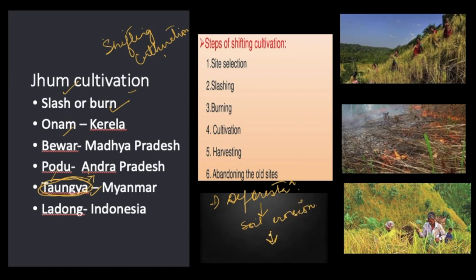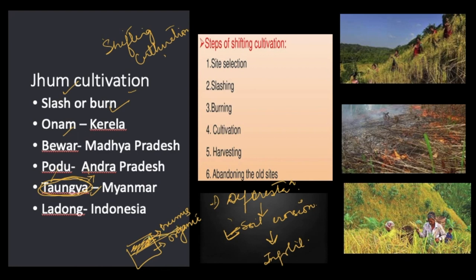The main impact of shifting cultivation on the environment includes deforestation. Because of deforestation, without any vegetation on the land, there are high chances of soil erosion. Soil erosion leads to infertility of the soil because the topmost layer of soil contains a large amount of humus and organic matter. Due to soil erosion, there is runoff of this organic matter and humus, making the soil more depleted and exhaustive.